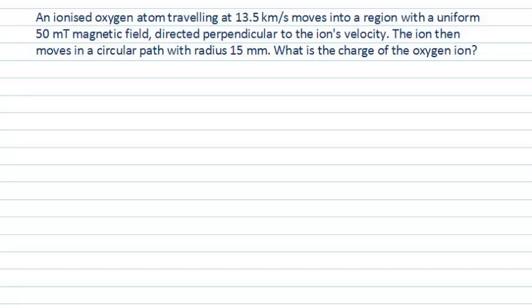Now you can see in the question we have a charged particle, in this case an ionized atom with a particular speed moving into a magnetic field whose direction we know something about. Then we know the subsequent motion of the charged particle, and the question is asking us to find the charge on this oxygen ion.